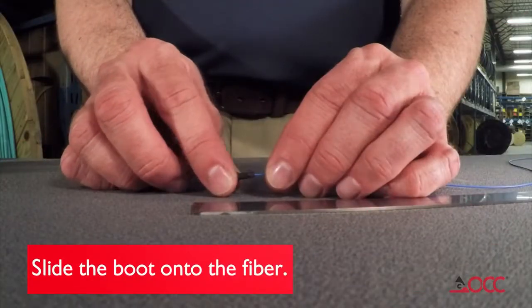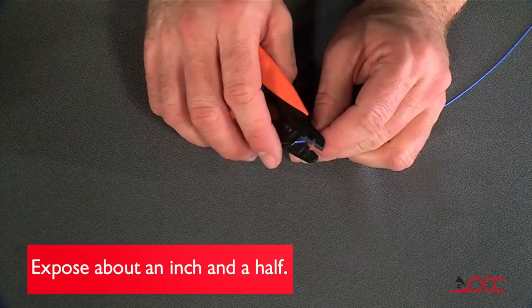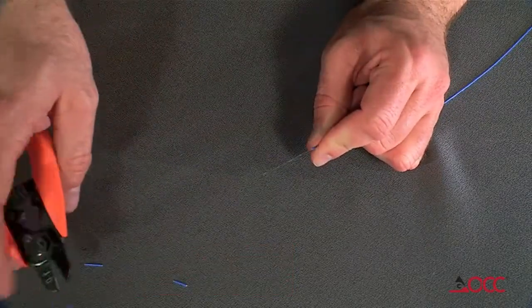First, slide the 900 micron boot onto the fiber. Strip the fiber to a length of about an inch and a half. This measurement is not critical.